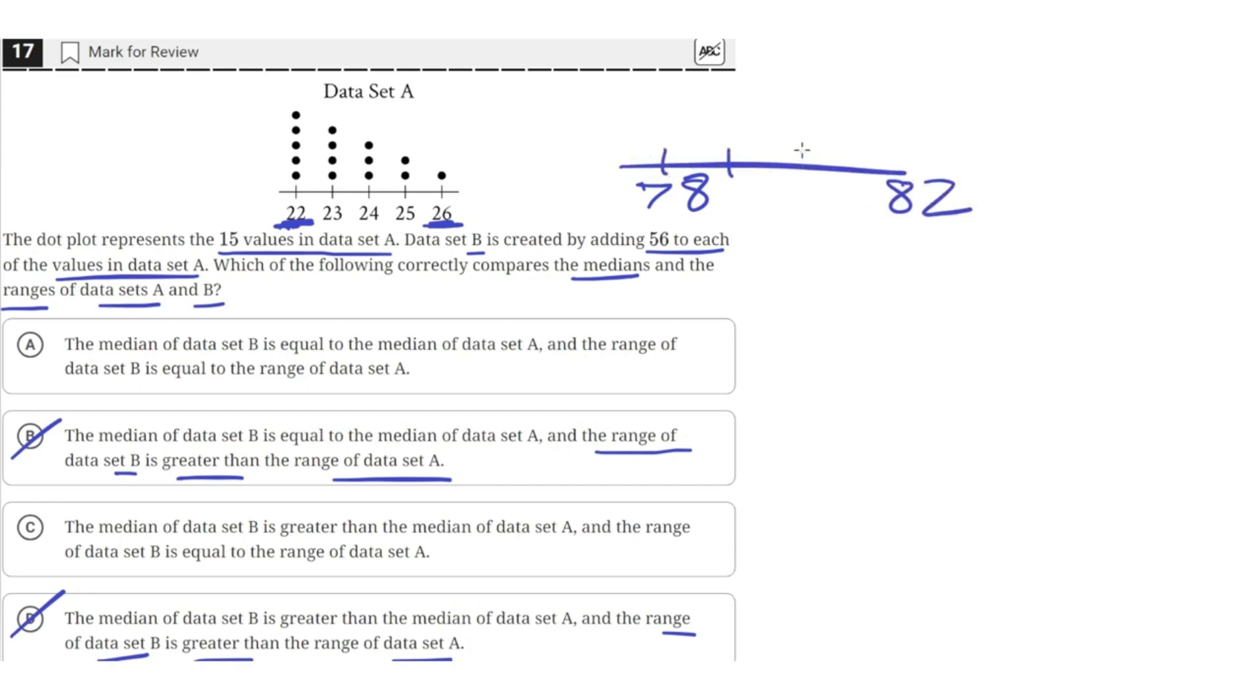So in data set B, the median will be much larger because it will have to be a value between 78 and 82 compared to data set A. So data set B's median will be much larger than data set A's median. Answer choice A says the median of data set B is equal to the median of data set A, so that's wrong. But answer choice C says the median of data set B is greater than the median of data set A, so that's correct.